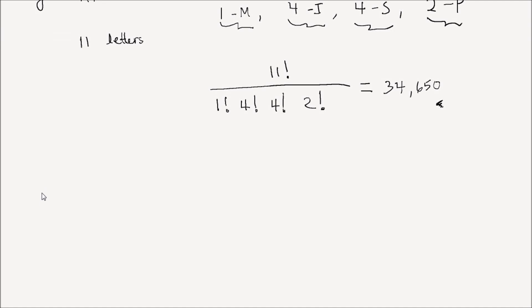In the first part of lecture number four, we looked at permutation. A permutation of k objects from n objects is an ordered sequence of k objects selected from a pool of n without replacement. But in this lecture, we're going to look at combinations instead of permutations.